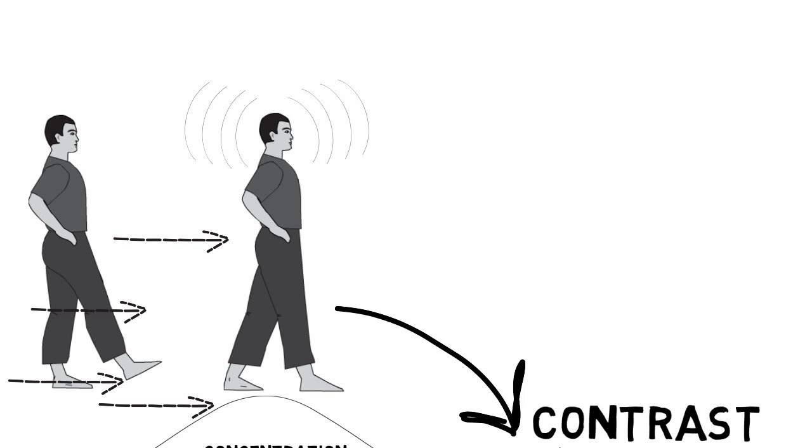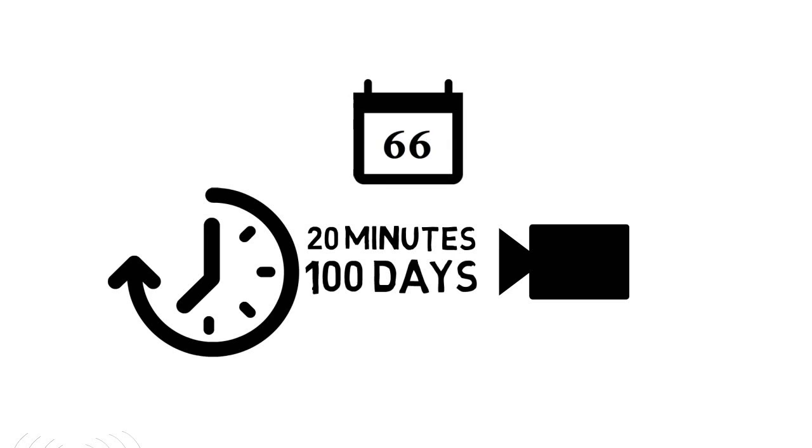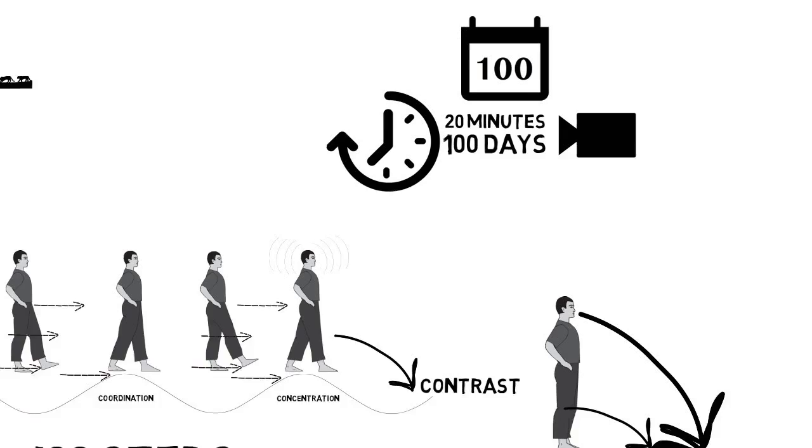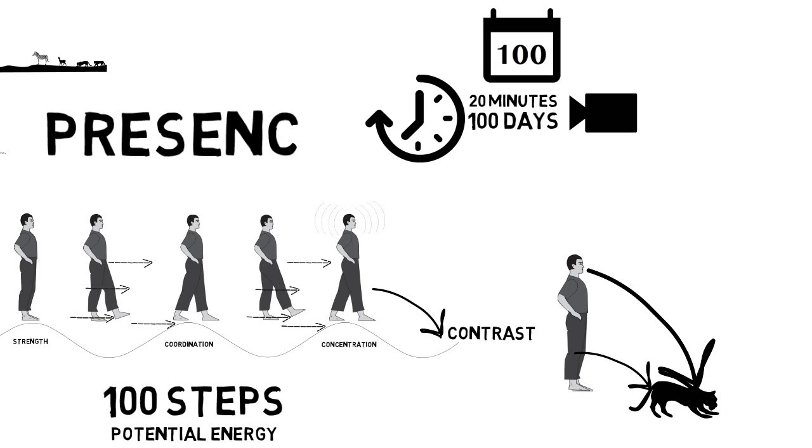Try practicing this 20 minutes a day for 100 days. You can film yourself on day 1, day 33, day 66, and day 100. See how you've changed. There's only one of a great number of exercises you'll need to fully cultivate your presence. But even just this simple activity will begin to transform you and all of your actions will begin to contain more potential energy and presence.